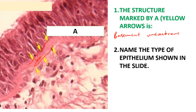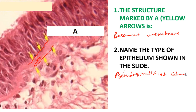If you look at the type of epithelium, you need to understand that this is a pseudo-stratified columnar epithelium. This slide is likely to be that of the trachea. This type of epithelium is normally found in the respiratory tract.